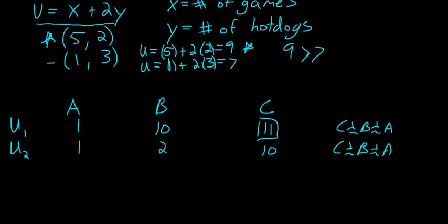Because distances, or the actual value of the utility doesn't matter, all that matters is which one is higher, utility one and utility two seem to represent the exact same preferences.